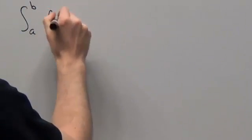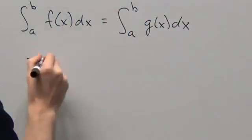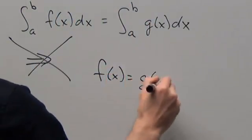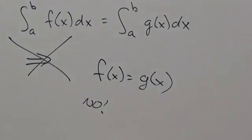In general, having two definite integrals be equal to one another does not require the integrands to be equal. There are a lot of different ways to take a sum and get a particular number, after all.